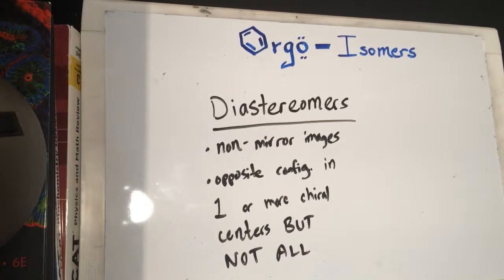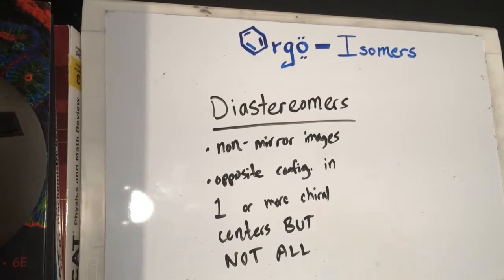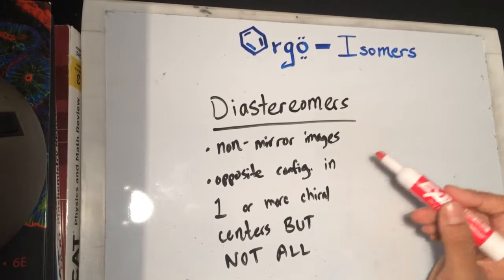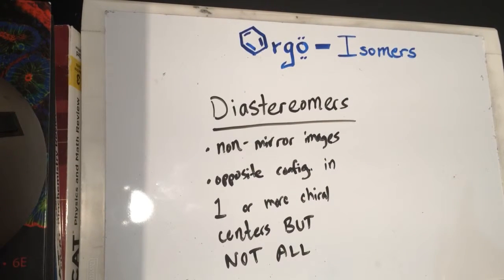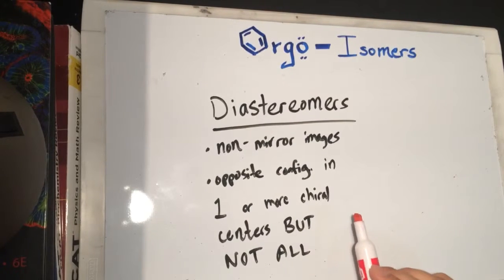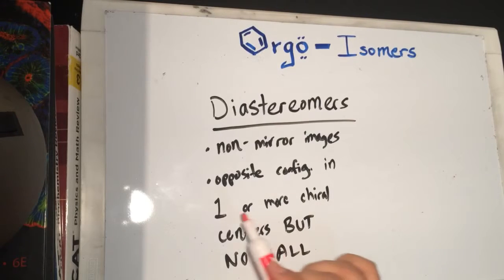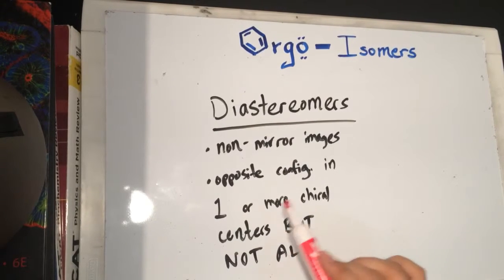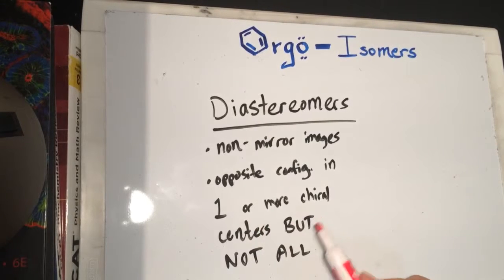Hey, what's up YouTube, this is Iconic and this is part two of isomers. In the last video I was talking about diastereomers, so I'm just going to go into it. Compared to enantiomers — enantiomers are mirror images, diastereomers are non-mirror images. Enantiomers have opposite configurations in all chiral centers, but diastereomers have opposite configuration in one or more chiral centers, but not all — because if they were all, they would be enantiomers.